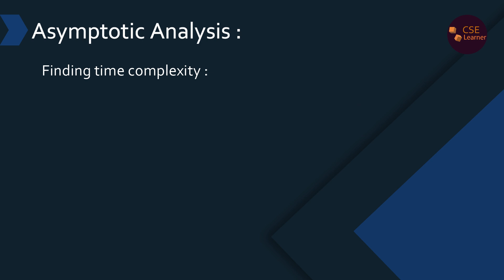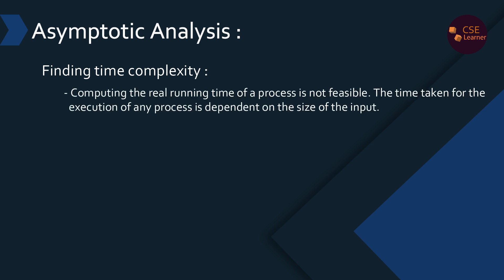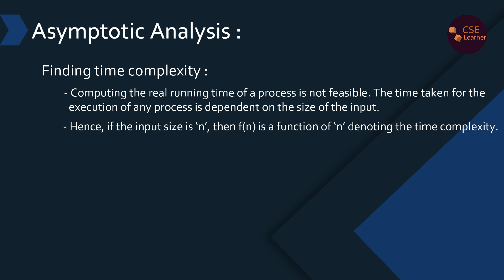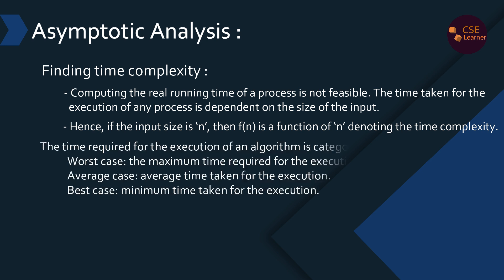Time complexity is defined by the number of inputs. If you add input, time changes accordingly. We define input size as n and the input process function as f(n) — that is, a function of n. Time complexity is expressed as f(n), the number of inputs. When executing an algorithm, we consider three categories: worst case, average case, and best case.